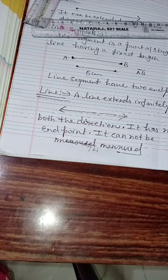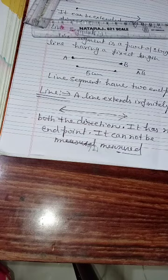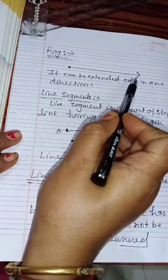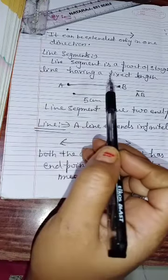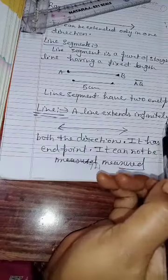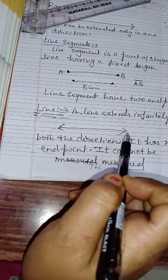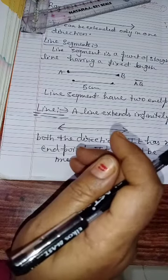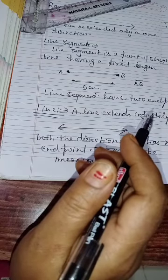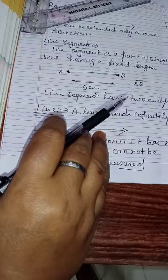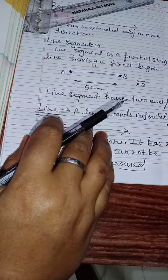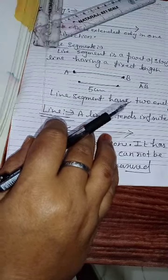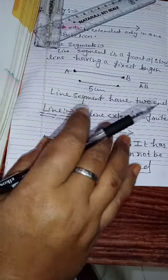A ray has one fixed point and can be extended in one direction. A line segment has two end points and cannot be extended. A line can be extended infinitely in both directions, so it has no end point and cannot be measured. In daily language we say 'draw a line,' but technically what we draw on paper is a line segment — we should say 'draw a line segment.'